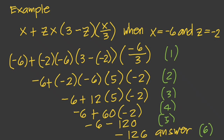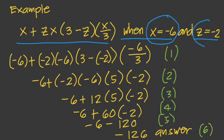Another example: given the expression x plus z, times x times 3 minus z, times x over 3 — let's simplify when x equals negative 6 and z equals negative 2. We substitute the values of x and z into the expression: x becomes negative 6 and z becomes negative 2 throughout. After replacing all variables with their given values, we evaluate the expression.